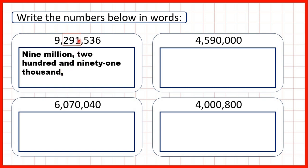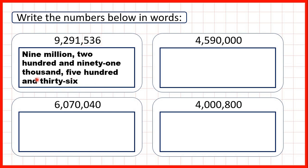Remember, the thousands digit comes before the second comma. So then we can just look at our last three digits. We have five hundred and thirty-six. So our number is nine million two hundred and ninety-one thousand five hundred and thirty-six.